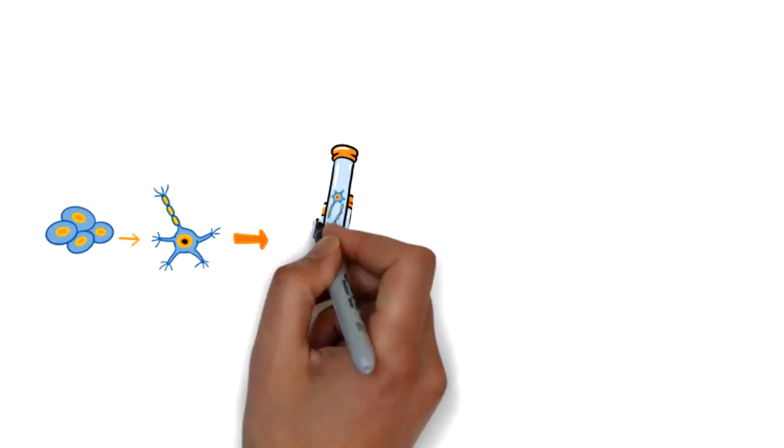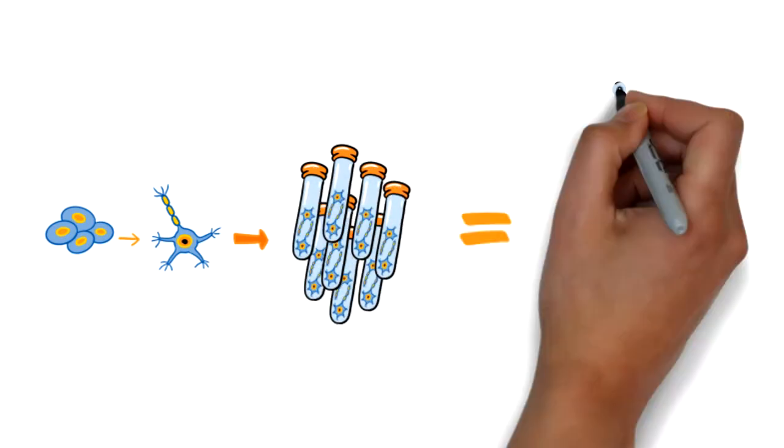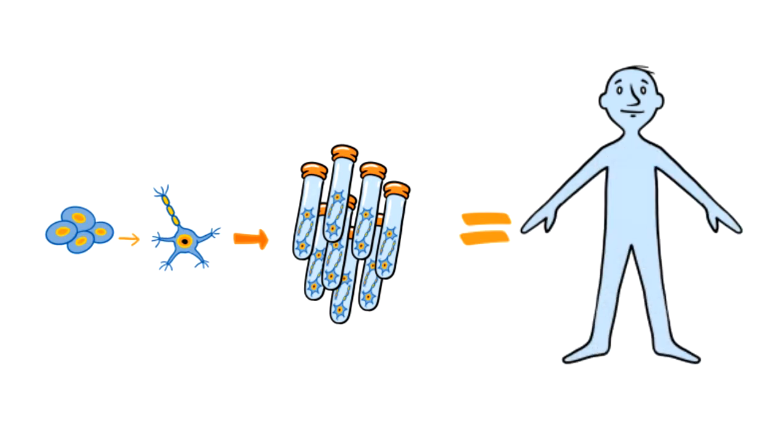When your research concerns human biology, you want a stable, human-based model that provides biology that is relevant and predictive, which is why CDI has developed iCell Glutoneurons.